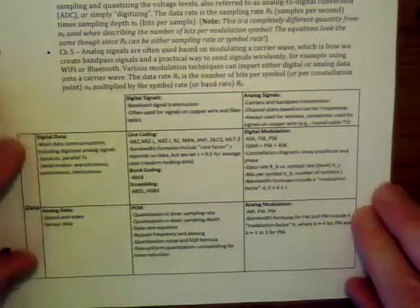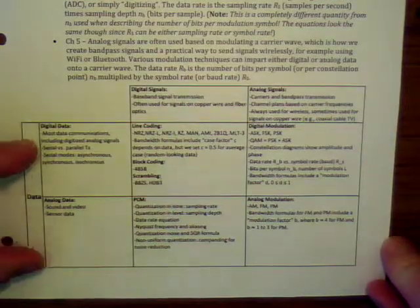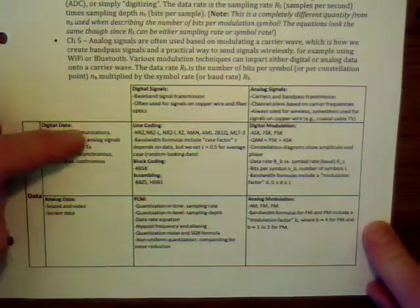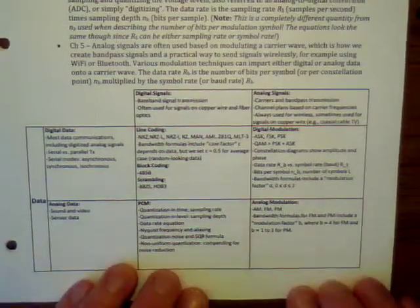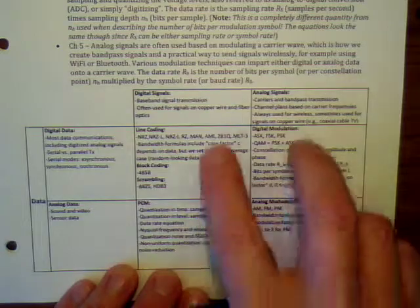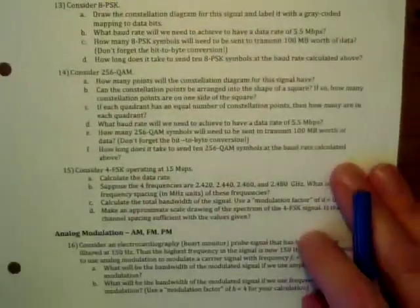This gives you the topics in a nutshell. It's a chart with data — either digital or analog — in the rows, and signals — either digital or analog — in the columns, dividing up between chapters four and five with a lot of details. There are 16 problems on this review sheet; try to do them all.